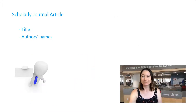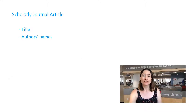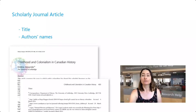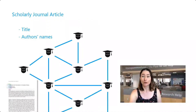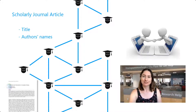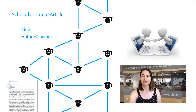Just as a business card allows you to follow up with a person by contacting them at a later time, scholarly articles include contact information for primary authors in the form of email addresses. Because a scholarly article is just one contribution to an ongoing conversation, authors really want to be in touch with others they're conversing with. An email address provides a means for side conversations between readers and authors, and for follow-up questions and idea sharing not suited to the larger group discussion taking place in the scholarly literature.